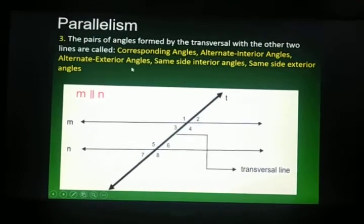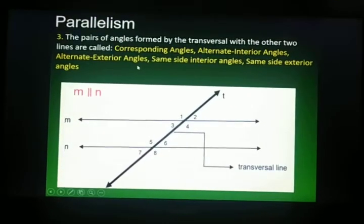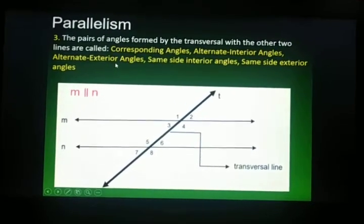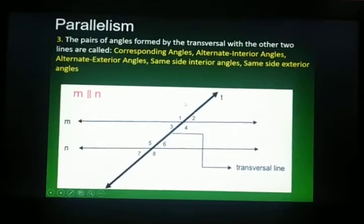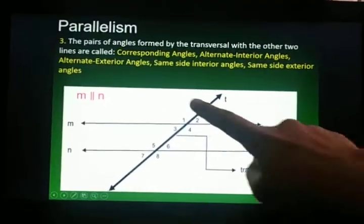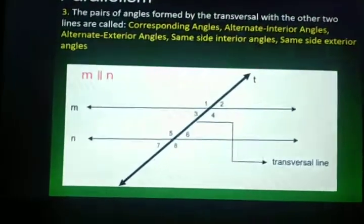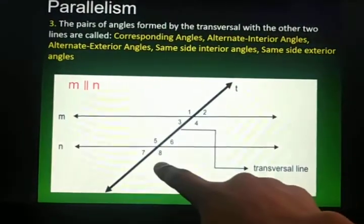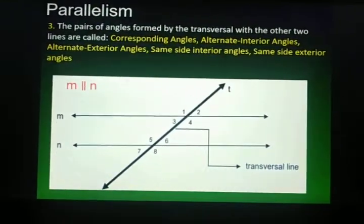Next, we have alternate exterior angles. These are angles outside the parallel lines — that's why we call them exterior. But they are also congruent. The other one is on one side of the transversal and the other is on the other side. We have angles 1 and 8, and angles 2 and 7. Alternate exterior angles — angles 1 and 8, and angles 2 and 7 — are congruent.